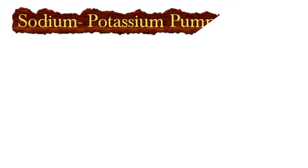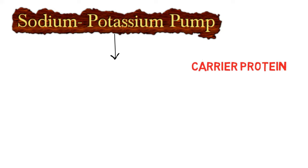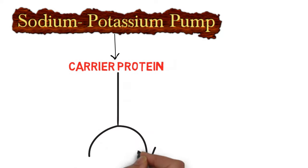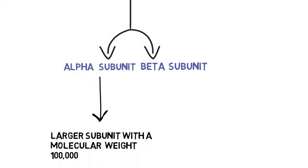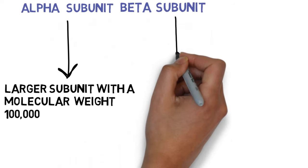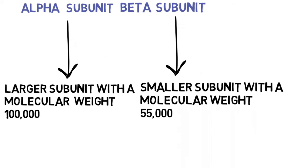Discussing the structure of the sodium potassium pump, it consists of a carrier protein which has two subunits: an alpha subunit and a beta subunit. The alpha subunit is larger with a molecular weight of 100,000 and the beta subunit is smaller with a molecular weight of 55,000. These subunits have different significance.